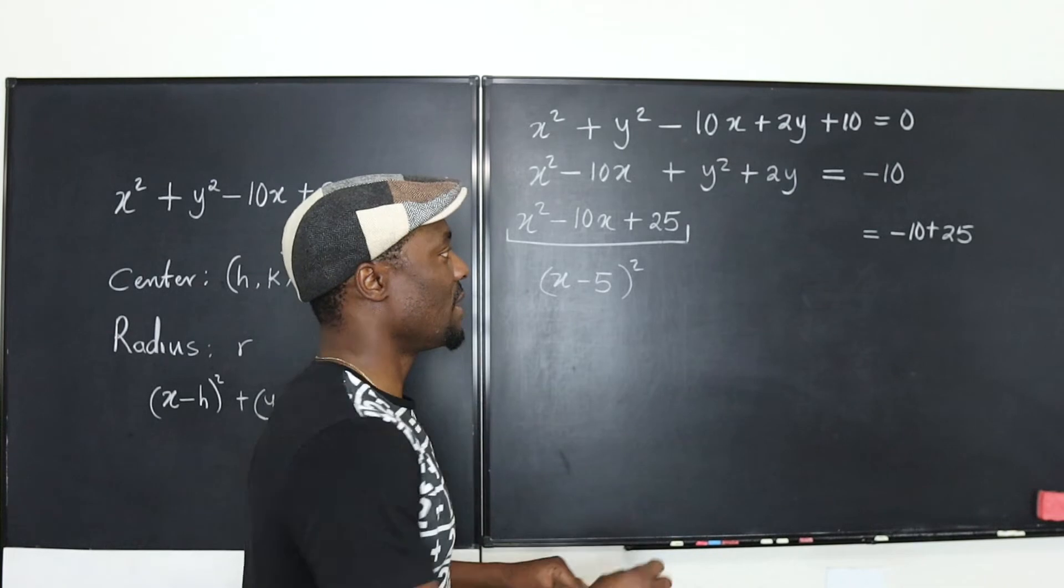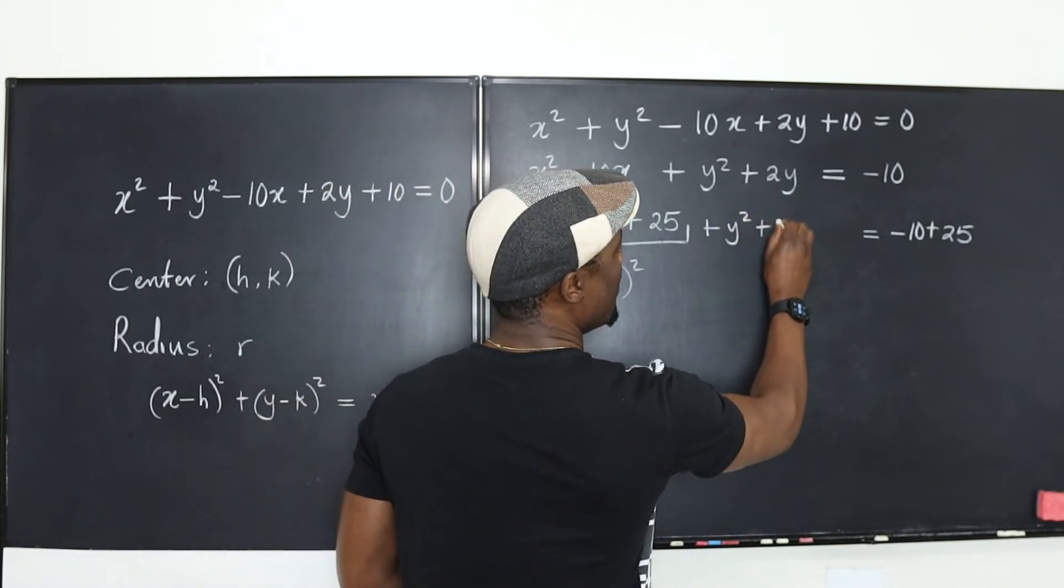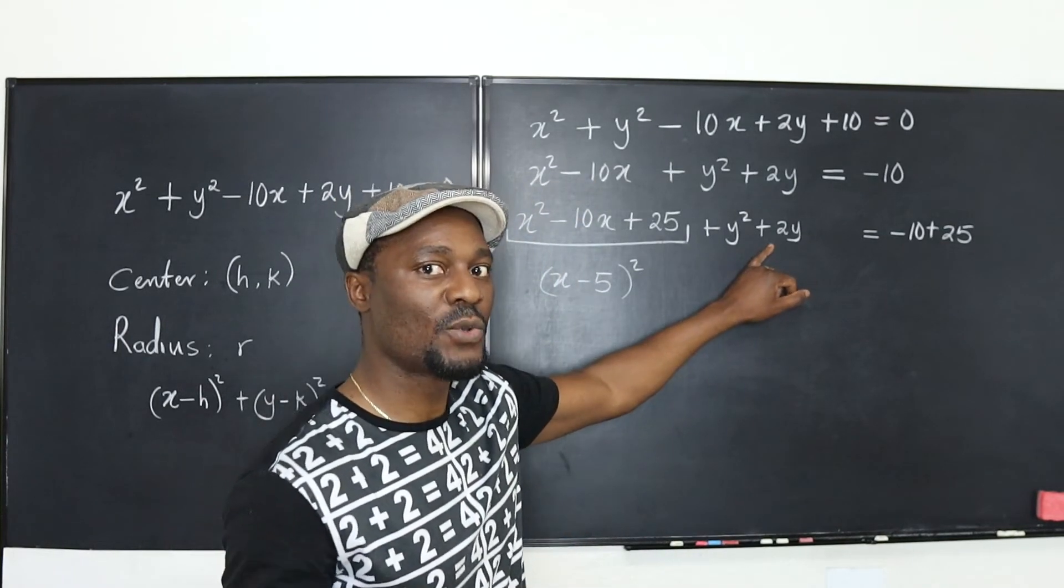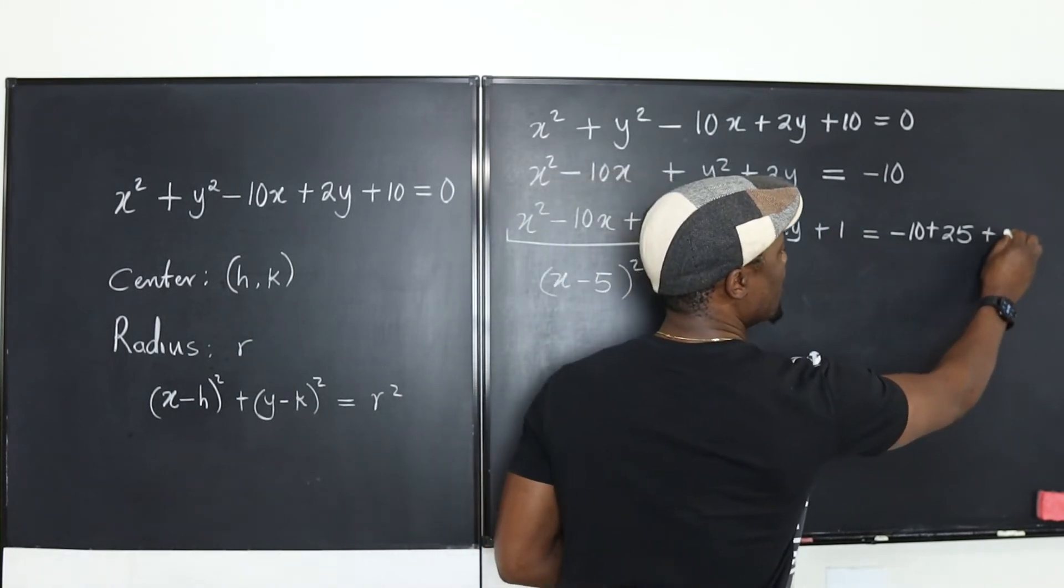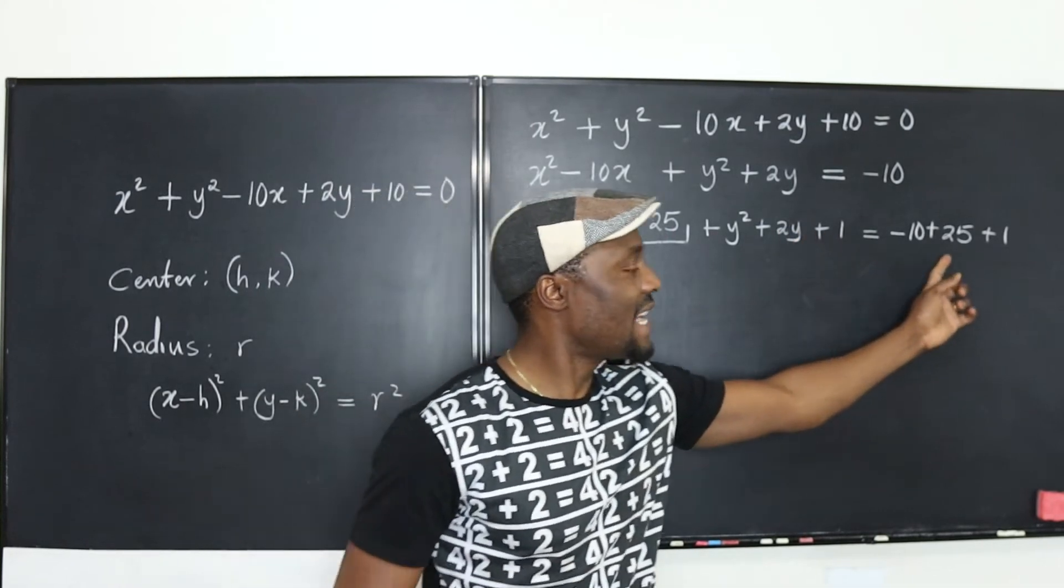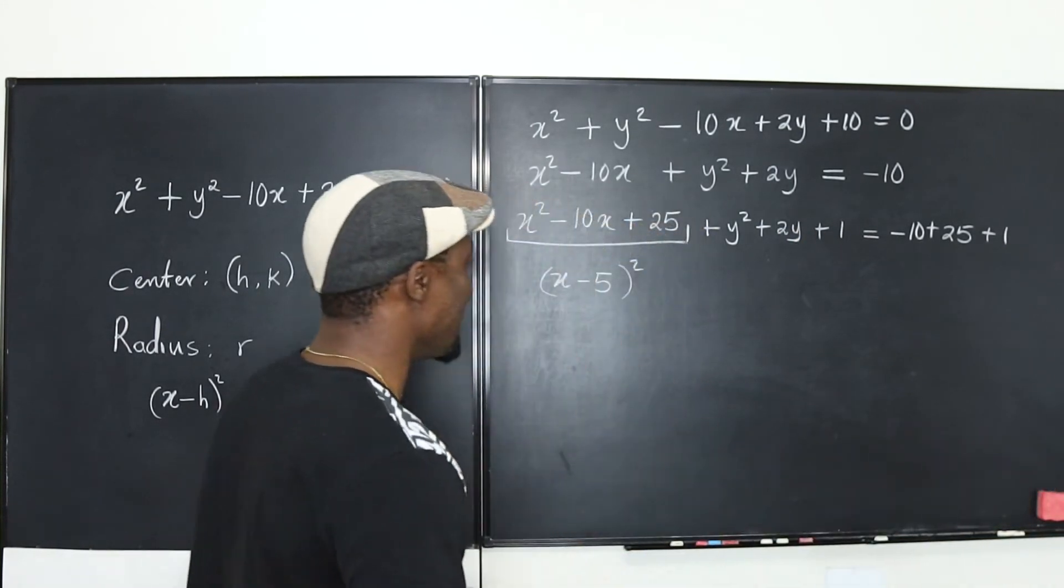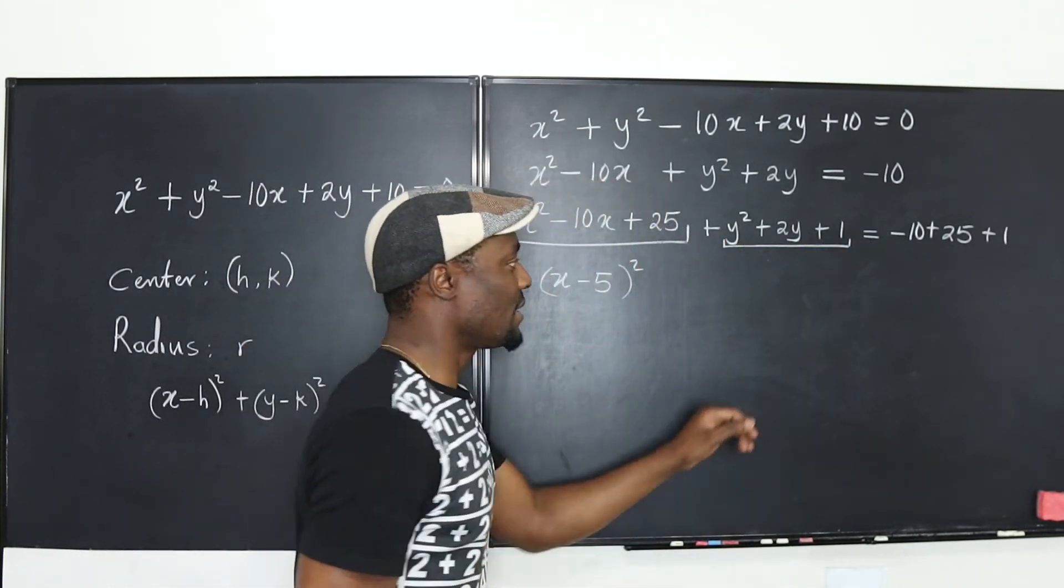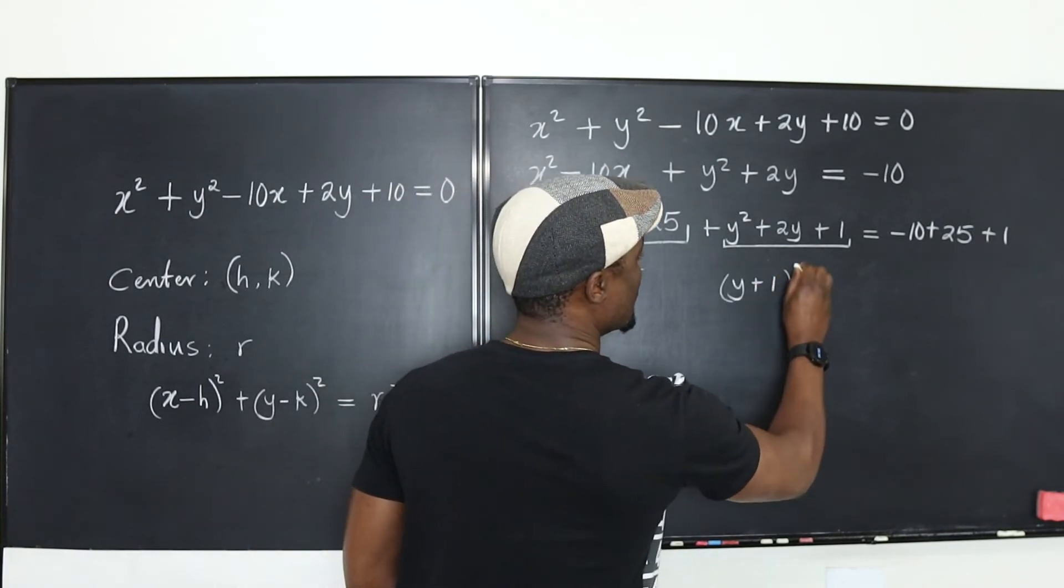Do the same thing for this one. It's y² + 2y. If I take half of this, it's 1, and the square of 1 is 1, so plus 1. I have to add 1 here too. I added 25 here, I added 1 here, so I've added the same to the other side and haven't changed anything. This, when factored, becomes (y + 1)².